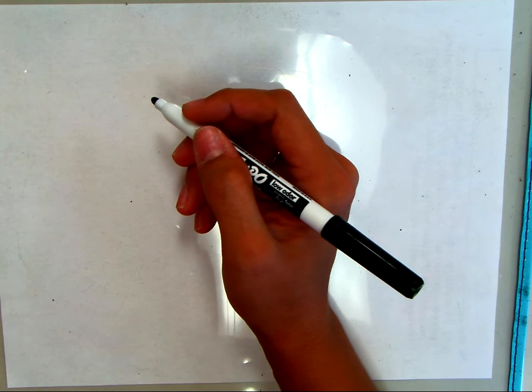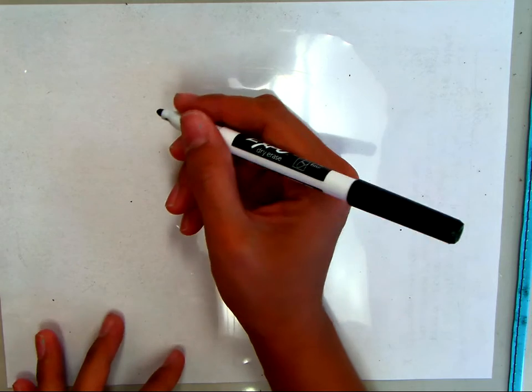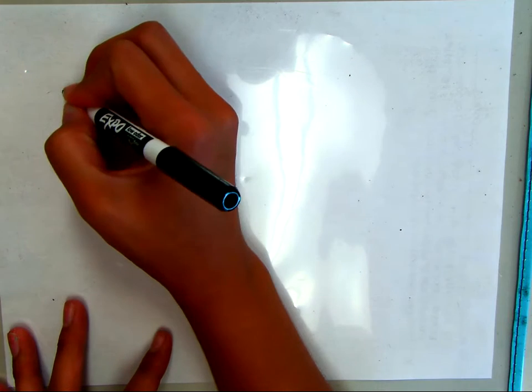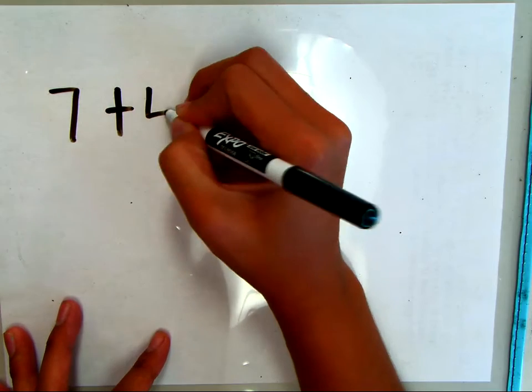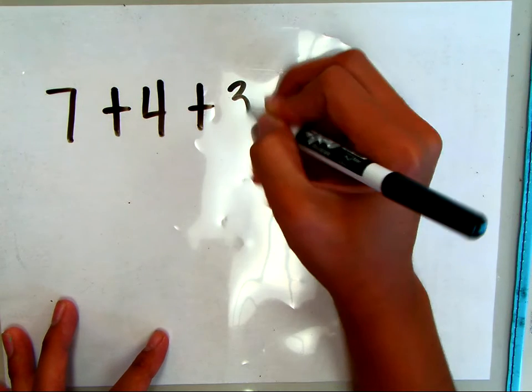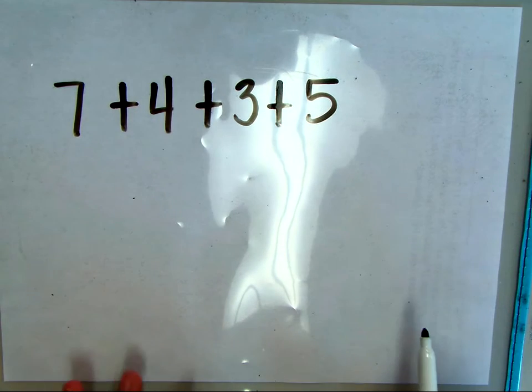This was one of our first homeworks this week. If we look at a number string like 7+4+3+5, this is a very simple number string—there's no two-digit numbers.